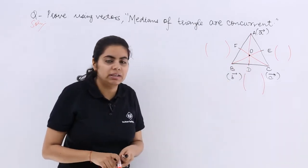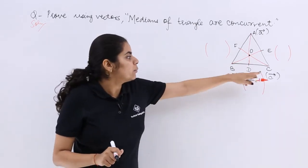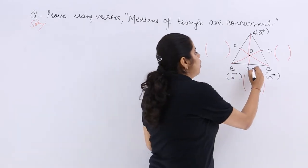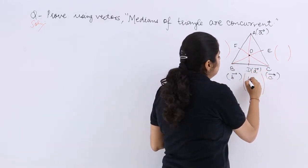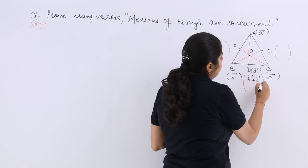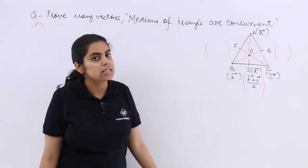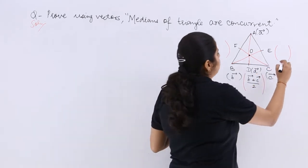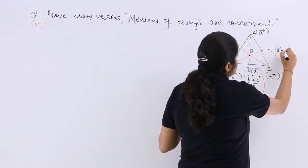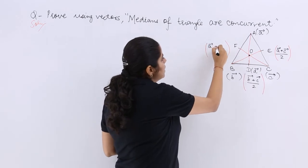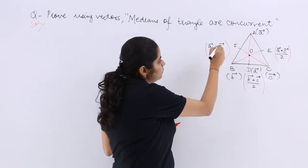Now D is the position vector of this point, and the small d position vector is equal to B plus C whole upon 2, because that is obtained by midpoint theorem. Similarly, E is the midpoint of A and C, so it is A plus C by 2. And similarly F is A plus B by 2.